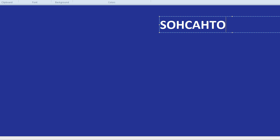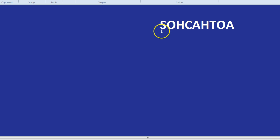SOHCAHTOA is the little phrase we use and it represents the fact that sine equals the opposite side divided by the hypotenuse. Cosine equals the adjacent side divided by the hypotenuse, and tan is the opposite side divided by the adjacent.